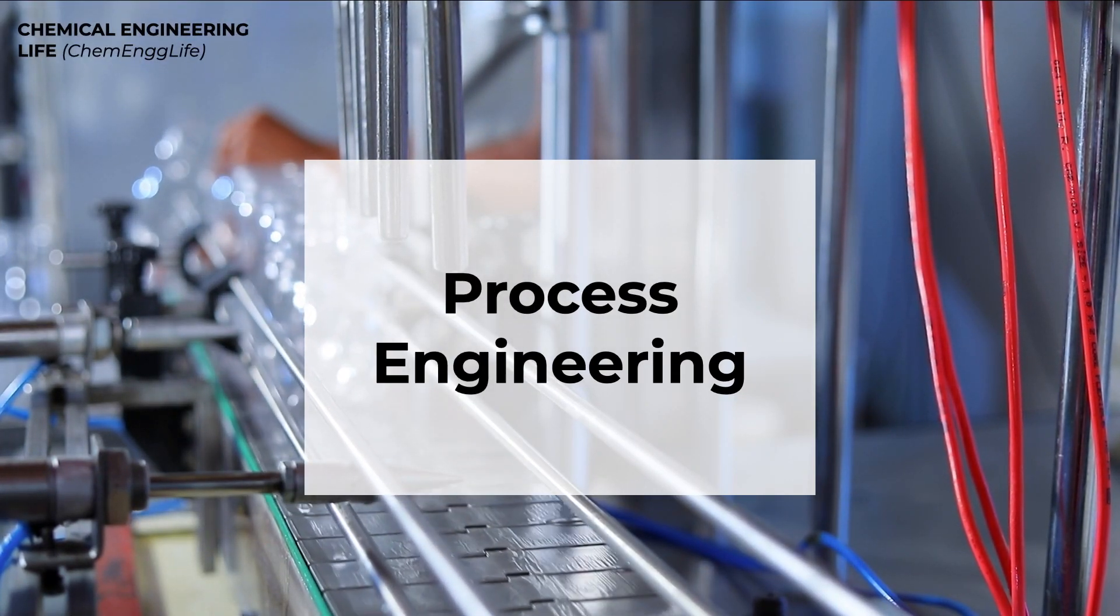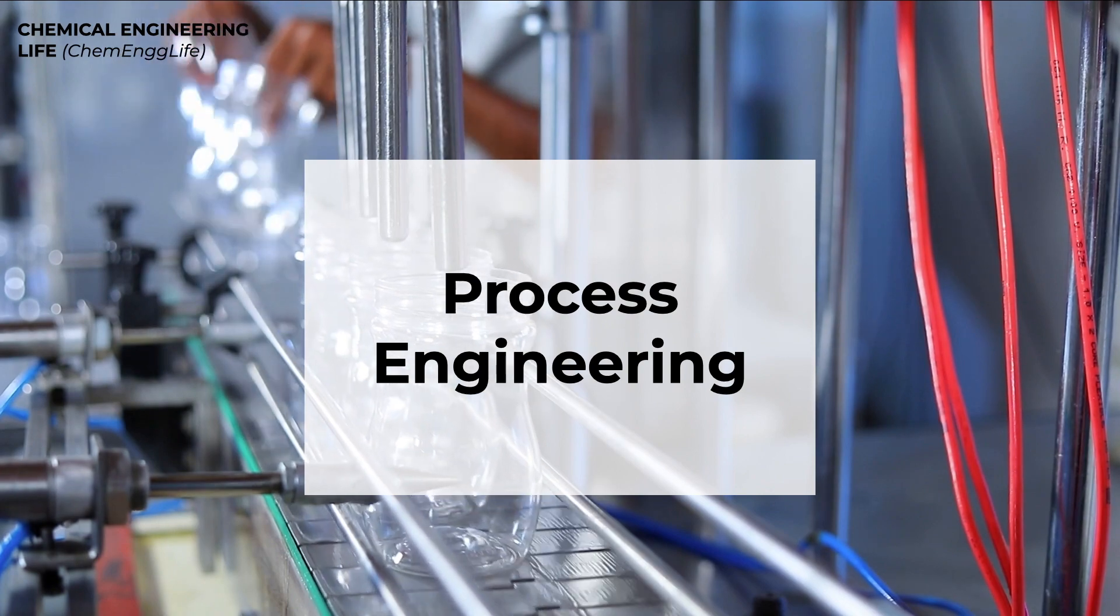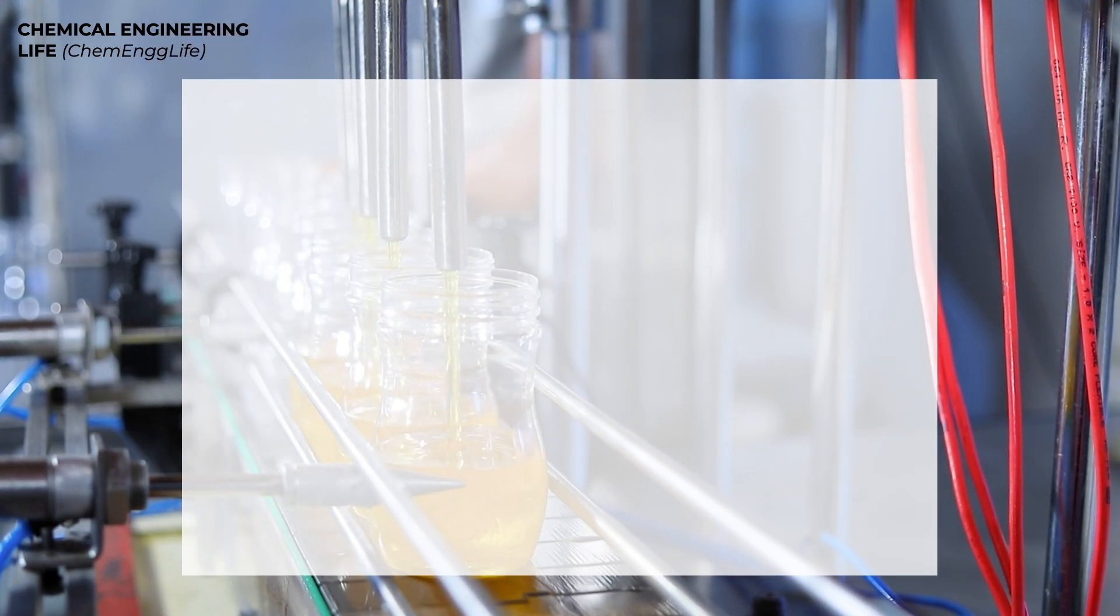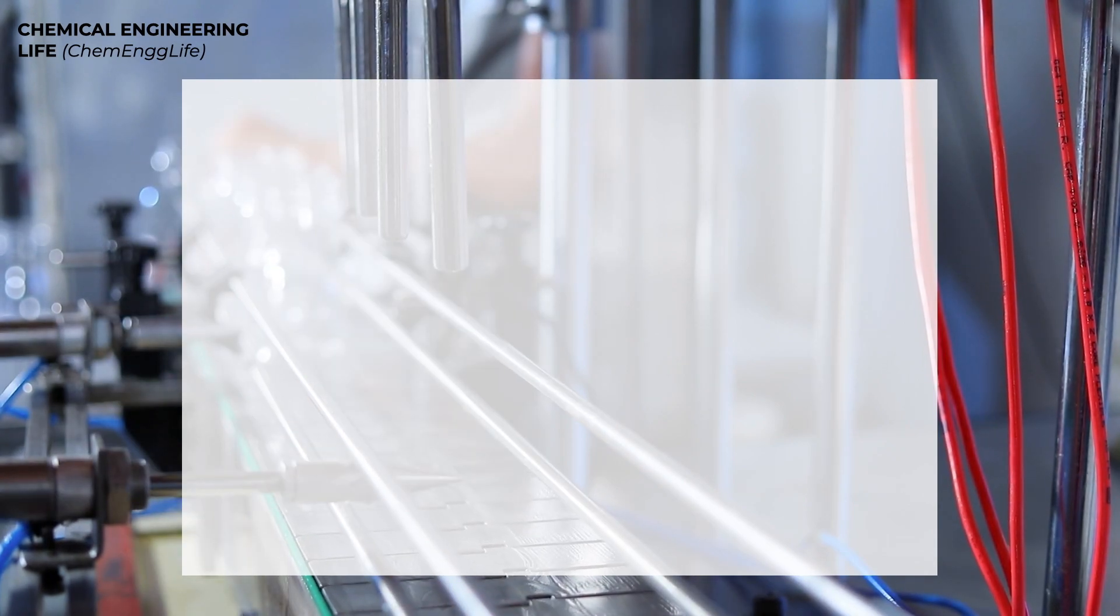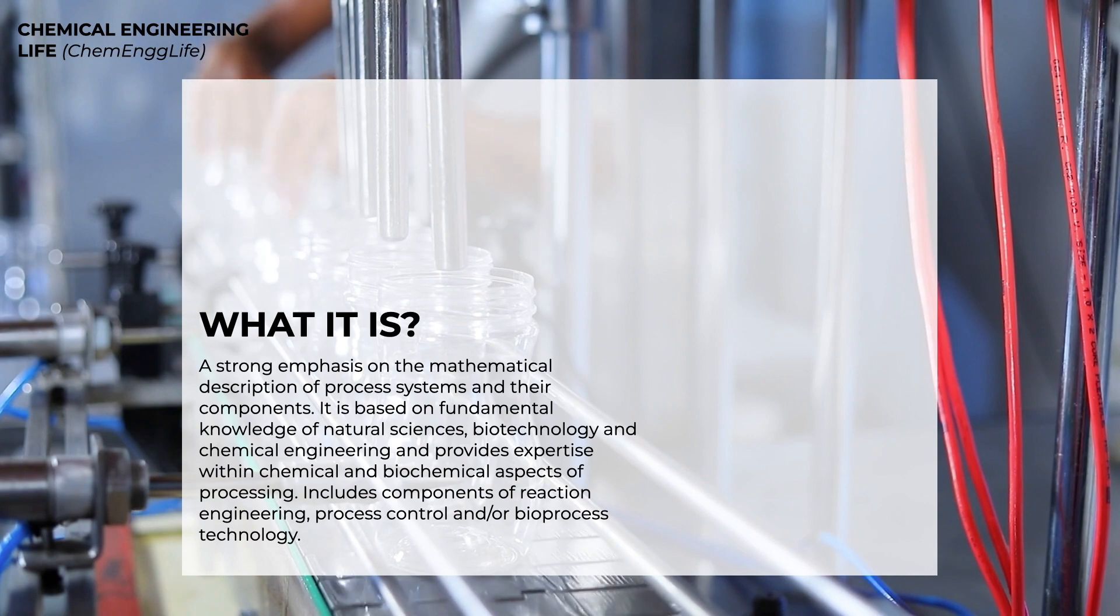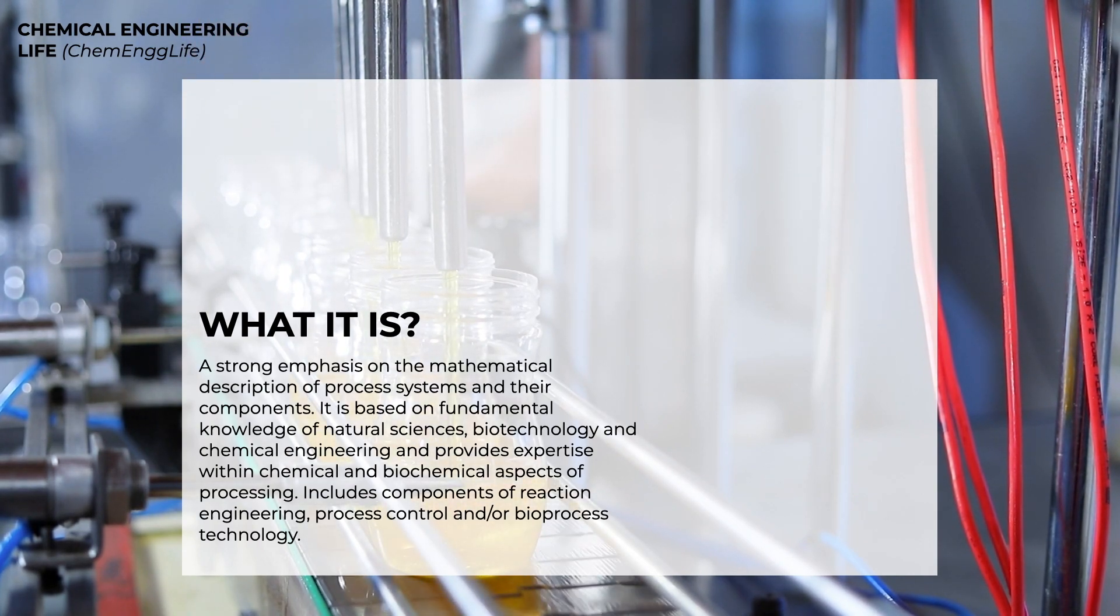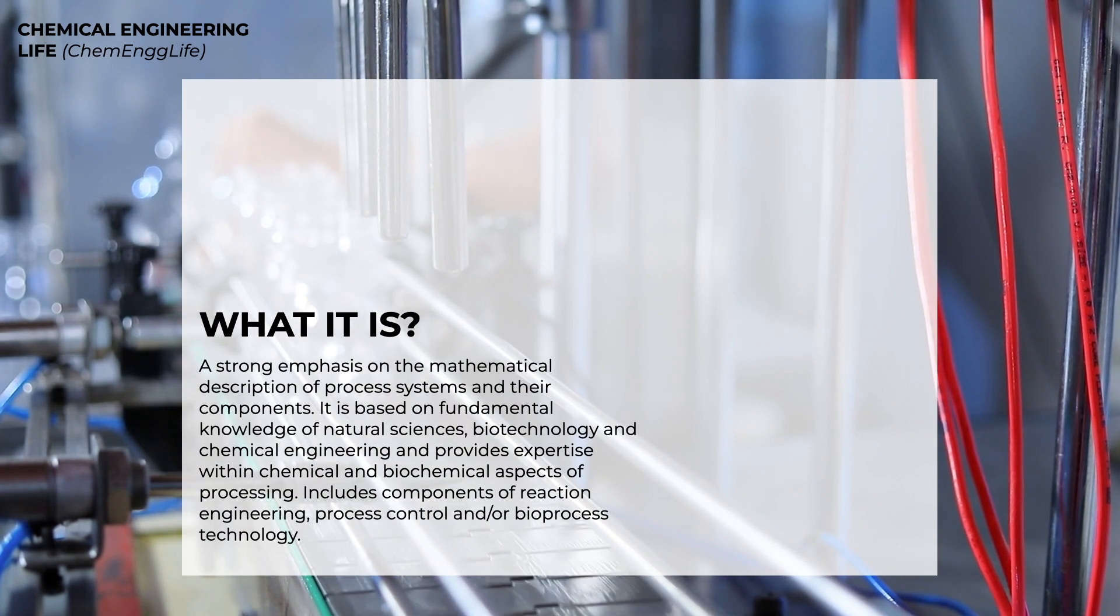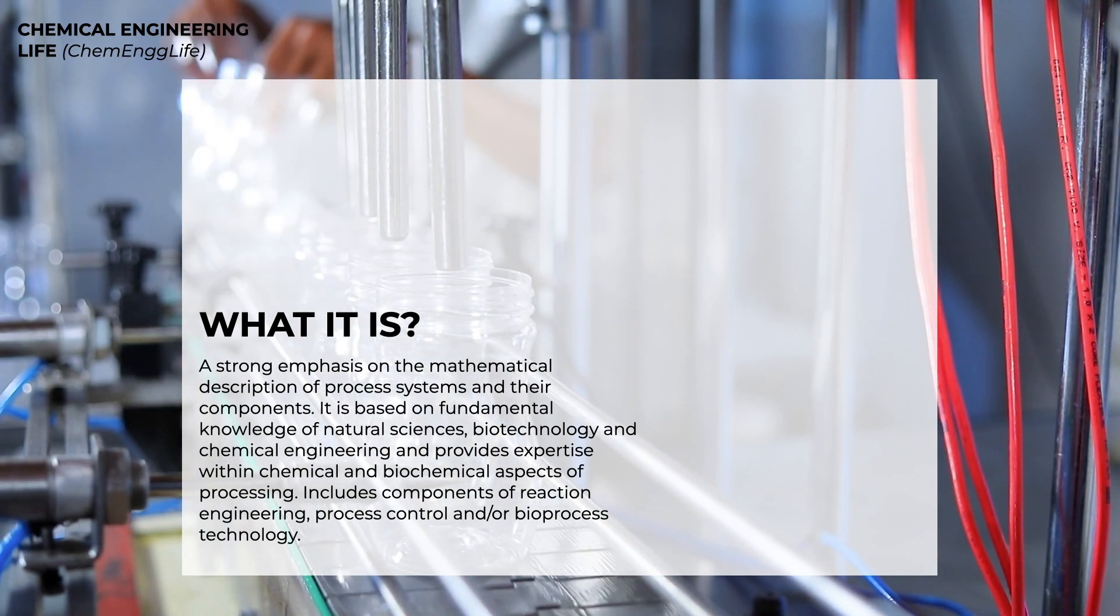The first and the most common specialization area within chemical engineering is Process Engineering. Now Process Engineering is basically the study of converting raw materials into high value products. Let's take a product such as biodiesel, which can be produced from cooking oil. People with Process Engineering specialization are the ones who provide their expertise in making that conversion.